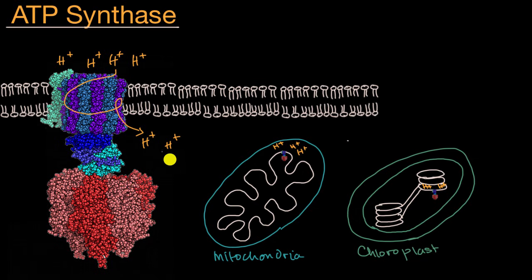So down here, going into this part of the complex, you'll have an ADP and a phosphate group. And then that rotation force that's provided by that electrochemical gradient then produces our ATP.